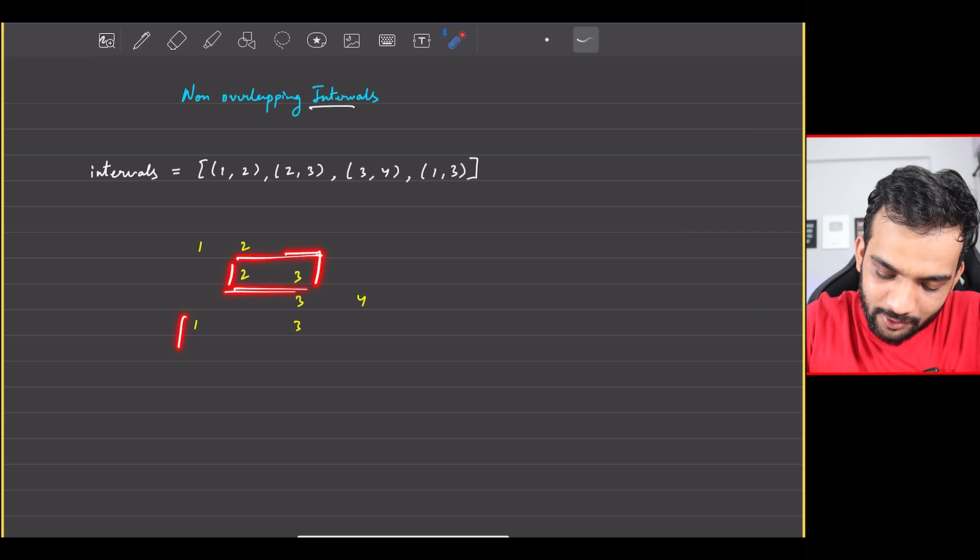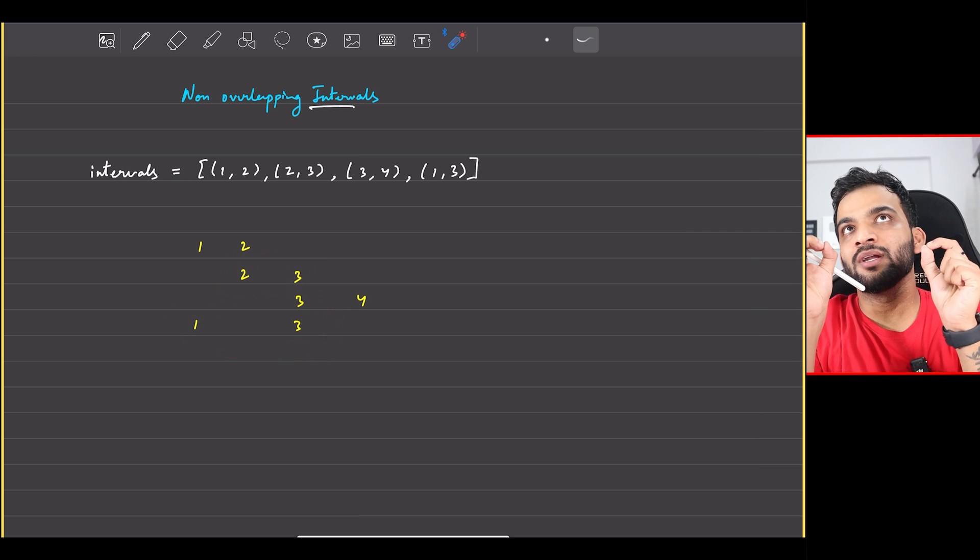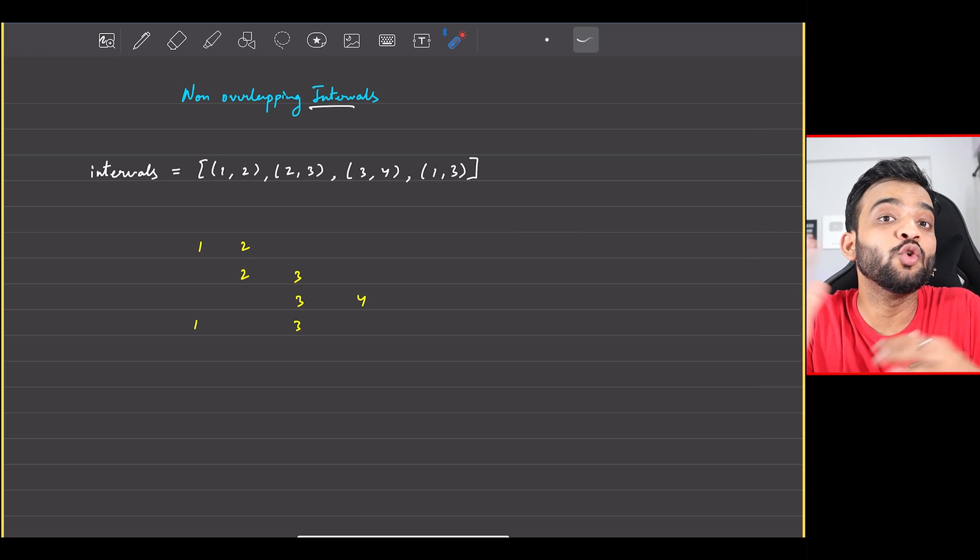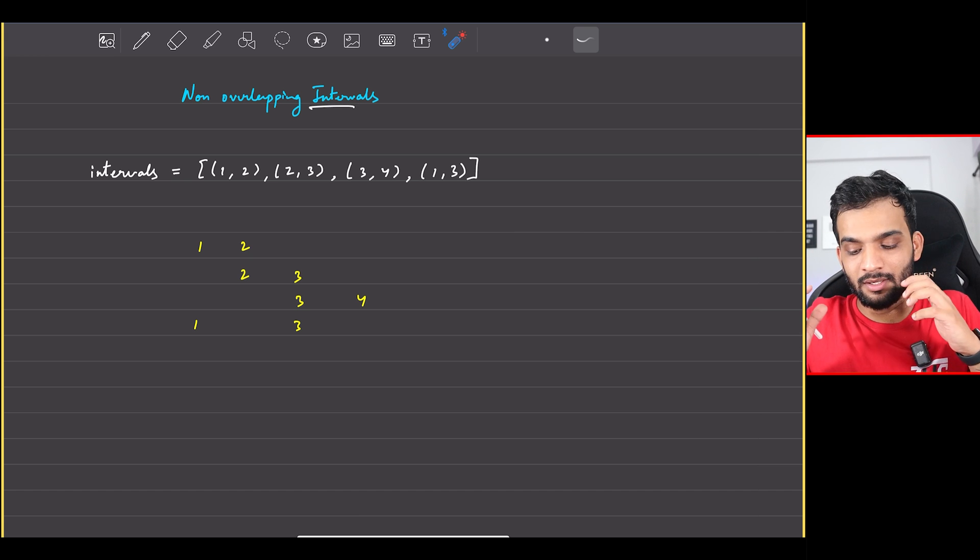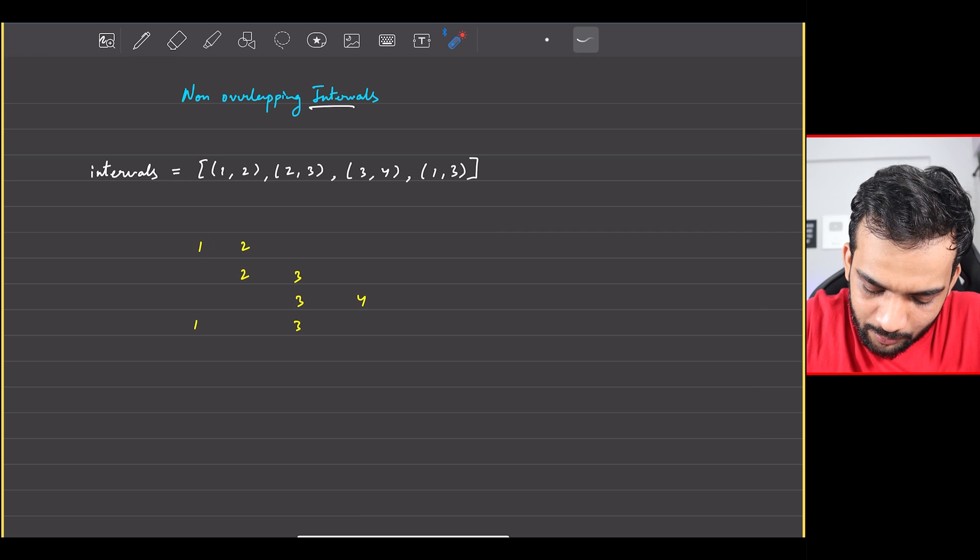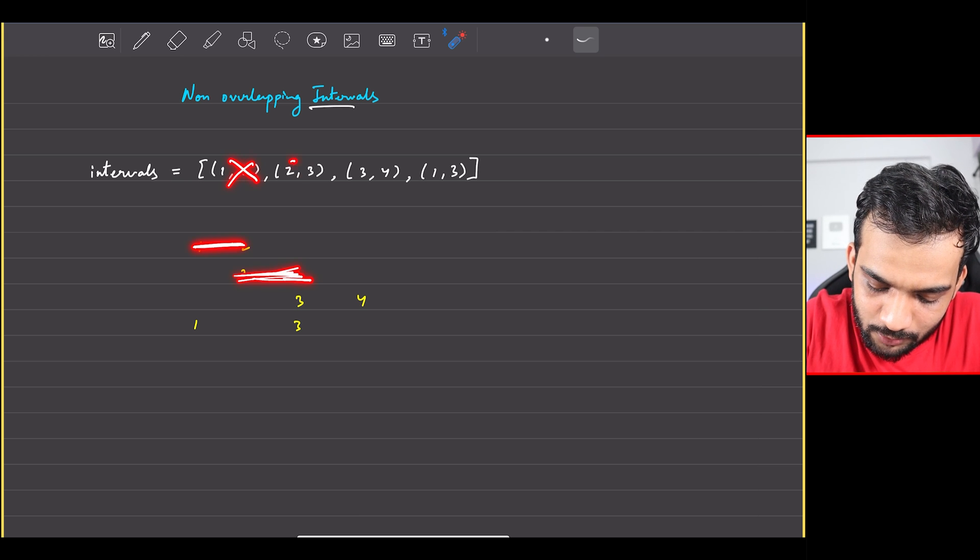(2,3) is overlapping with (1,3). Now the question is asking, can you remove some intervals such that there is no overlap? You can say, okay if I'll have to remove, what if I remove (1,2) and what if I remove (2,3), which is these two.